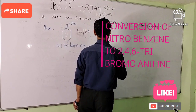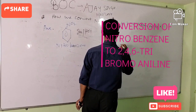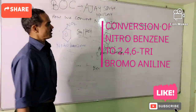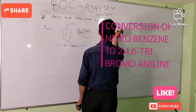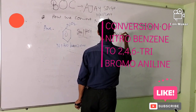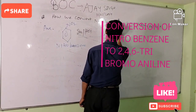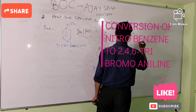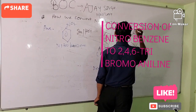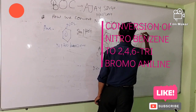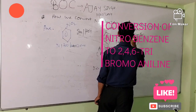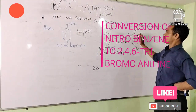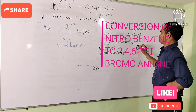Just now, when aminobenzene is treated with bromine water — Br₂ in the presence of H₂O — then you will directly get the product with NH₂ group on the benzene ring at positions 1 through 6.